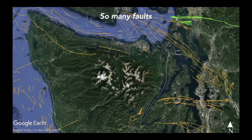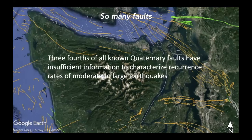We also have lots of other faults and we don't know exactly how to characterize almost three-fourths of them. This map shows everything that's been active in the Quaternary period, about 2 million years ago. For some of these faults, we know they've been active, but we don't necessarily know when the last earthquake was and how frequently they experience earthquakes. So there's still a lot to figure out.